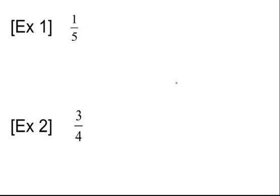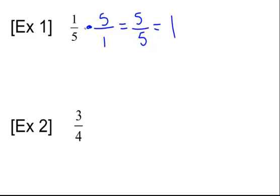Write down the reciprocal of each of these numbers. I'll do example one, you do example two. For example one, if it's one-fifth, the reciprocal is five over one, because one times five is five, five times one is five, and five divided by five is one — so our product is one. For number two, the reciprocal of three-fourths is four-thirds, because three times four is twelve, four times three is twelve, and our product is one.